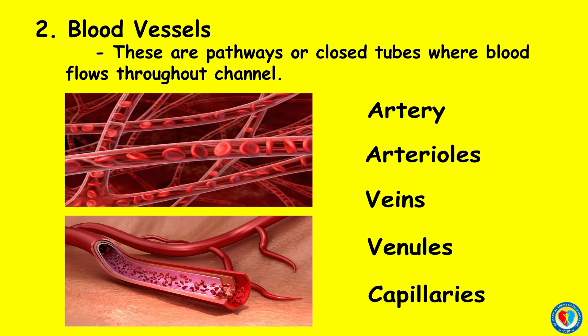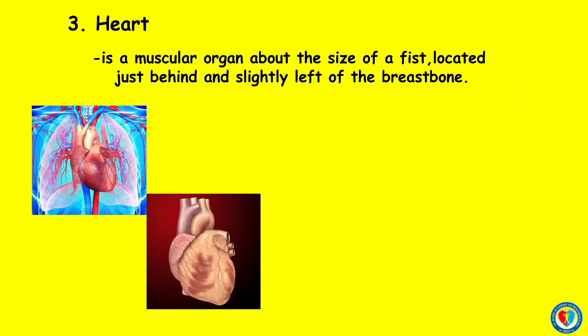The heart is a muscular organ about the size of a fist, located just behind and slightly left of the breastbone. It is divided into parts that work together to keep you alive. In the heart, atria are the upper cavities of the heart through which blood is passed to the ventricles.